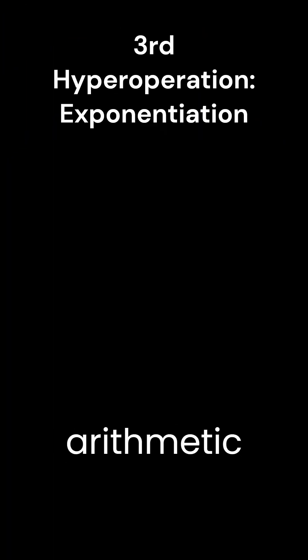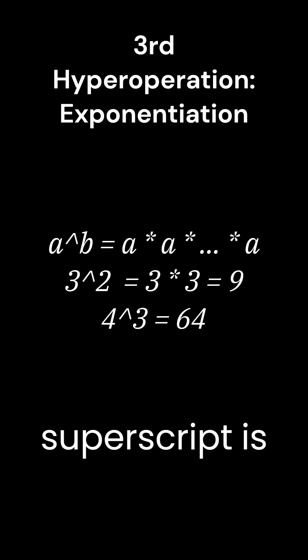Exponentiation is the third arithmetic operation, or hyperoperation. It is repeated multiplication, and a superscript is used to represent it. A to the power of B is defined as multiplying A, B times.